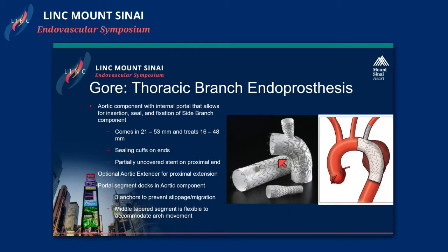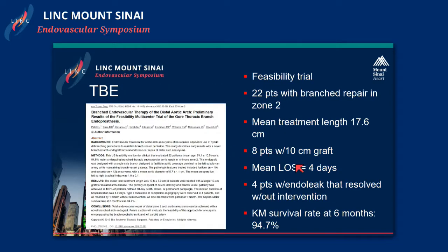The first device I'm going to present is the Gore single arch branch device. You can basically use this device in multiple configurations — you can branch into the subclavian, into the carotid, or into the innominate. You can combine that with a variety of bypasses. Overall, the results are favorable with this device. The main issue with all of these devices involving the arch is going to be the stroke rate. The treatment lengths can vary, and sometimes because of the distance between the carotid and the subclavian or the innominate to the carotid, these patients may be prone to some proximal endoleaks.